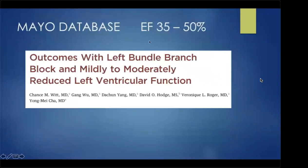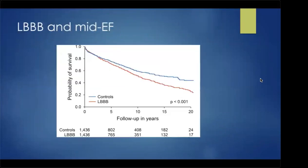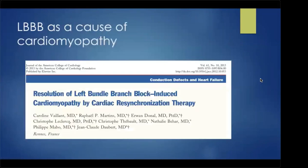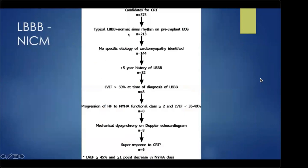Left bundle branch block was also shown to be harmful in patients with EF between 35% and 50% in a Mayo Clinic study. Those with LBBB were far more likely to be admitted for heart failure, have EF progress to 35% or less, or have a VT event. In France, Valiant published a paper showing patients who were CRT candidates had left bundle for over five years with no identifiable cause of cardiomyopathy — they started with normal EF, progressed to heart failure with dyssynchrony on echo, and everything normalized when they received CRT.